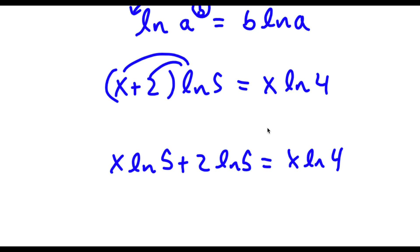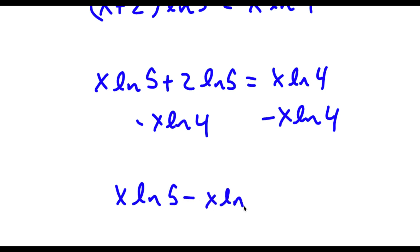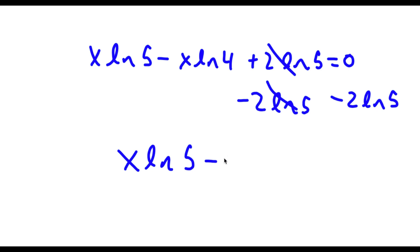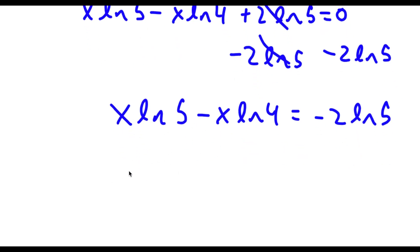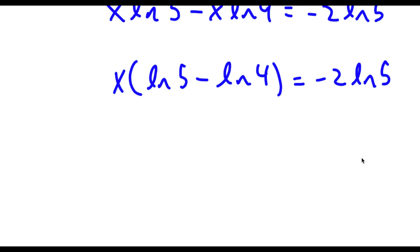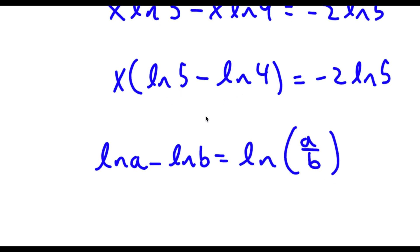Now I subtract x times ln 4 from both sides, giving x times ln 5 minus x times ln 4 plus 2 times ln 5 equals zero. Subtracting 2 times ln 5 from both sides, I get x times ln 5 minus x times ln 4 equals negative 2 times ln 5. Factoring out x, I get x times the quantity ln 5 minus ln 4 equals negative 2 times ln 5.